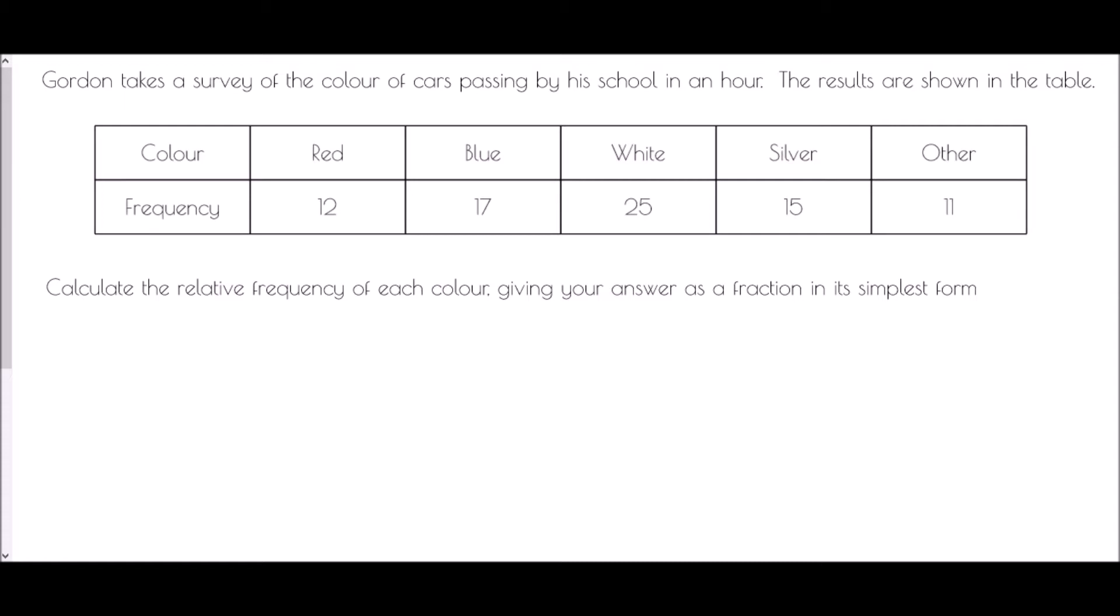Now the term relative frequency basically means experimental probability. Because we don't know the exact theoretical probabilities of a car being red or blue or white, we can use the information that we've gathered in an experiment as an estimate for the probability. So relative frequency just means how many have we got compared to the total.